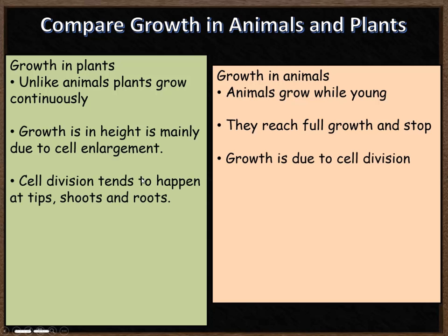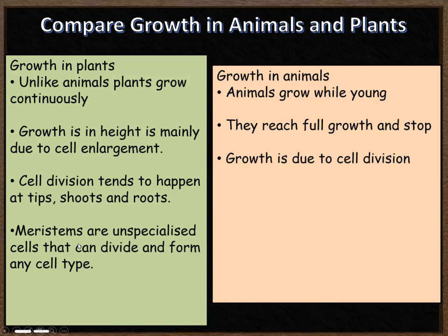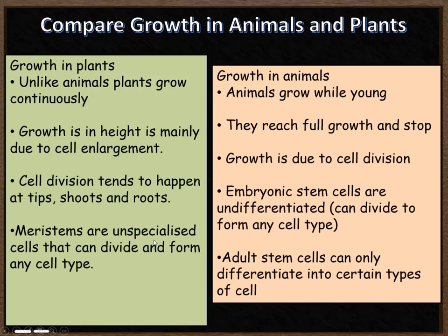Cell division in plants tends to happen at the tip — right at the end of shoots and at the end of roots. Meristems are unspecialized cells that can divide and form any type of cell. In animals you have embryonic stem cells that are undifferentiated and can divide into any type of cell, but they only exist while the animal is young — while an embryo inside the mother's uterus. Then you have adult stem cells which can only become certain types of cells. Whereas in the plant, the meristems are there throughout its life.